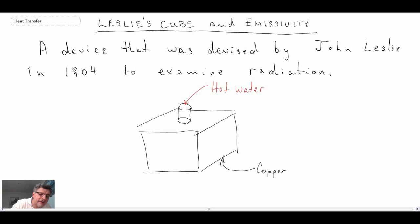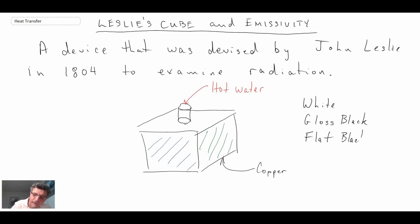And each of the sides of the Leslie's Cube have different surface finishes. And so the one that we'll be looking at has one side with white paint. The next side has gloss black paint. Then the next side has flat black. And the last side is just bare copper.